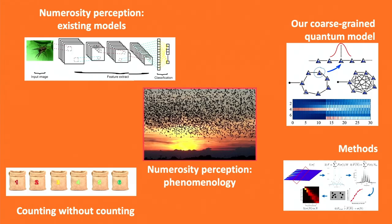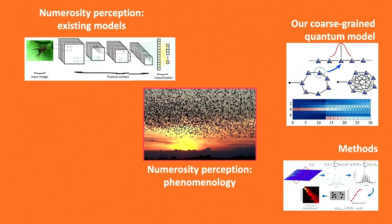How can we extract the code from our system? These words are important: the system is not trained to count. It counts because of the properties of the interactions between the spins, the quantum properties of tunneling, and possibly also some entanglement. So how can we do this decoding?